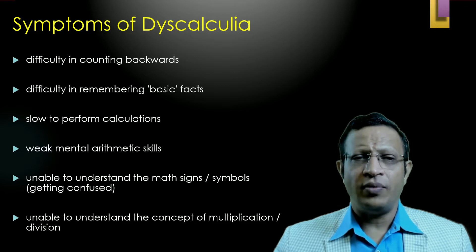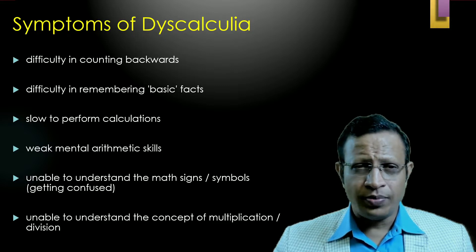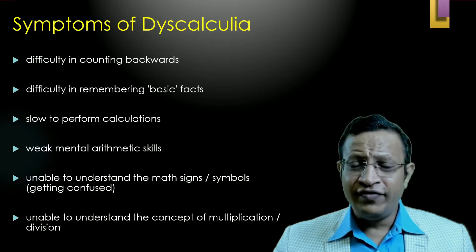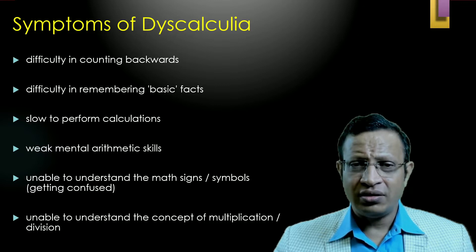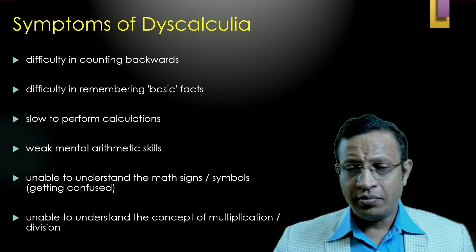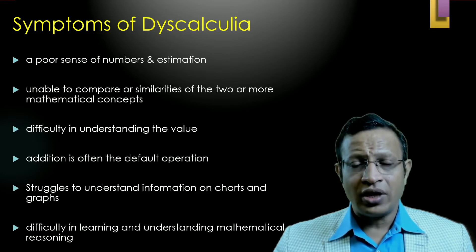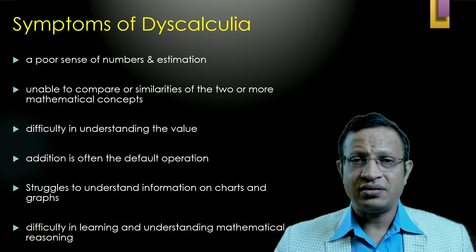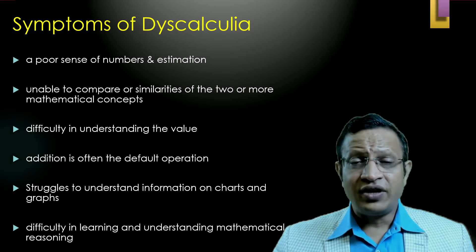Dyscalculia is a part of Specific Learning Disorder (SLD). SLD is an umbrella term for a group of neurodevelopmental disorders that are typically diagnosed in early childhood. However, in developing countries, it is very difficult to identify in childhood because the resources are very less, and invariably it will be recognized in adulthood. They are characterized by persistent, pervasive impairment, and can involve difficulty in reading, writing, arithmetic, or a mixture.